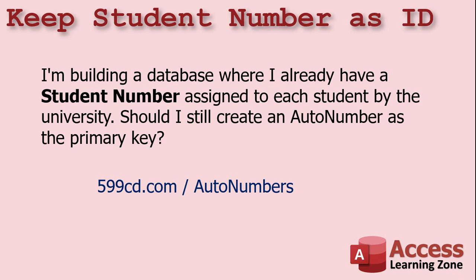Here's a popular question: I'm building a database where I already have a student number assigned to each student by the university. Should I still create an auto number as the primary key? I get this a lot — I've already got customer IDs or product IDs from suppliers. Should I keep those numbers? Yes, definitely keep those numbers. Make a field in your table called student number and store that number. But you should also make an auto number and have that as your ID field. There's nothing wrong with having both a student number and a student ID.